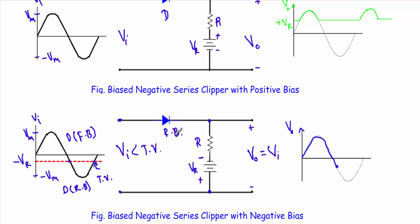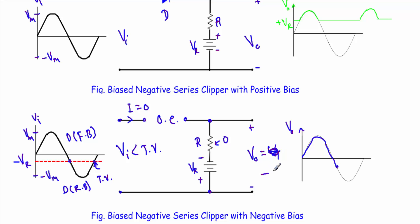When the input voltage Vi is less than the transition voltage, the diode will be in reverse bias. When a diode is in reverse bias, we replace it with an open circuit. With the circuit opened, the current flow I will be equal to zero, therefore there is no voltage drop across resistor R. Since we are taking the output across those terminals, the output voltage will be equal to minus Vr within that interval of the input voltage. After that, the output voltage will follow the same shape of the input voltage. This is the output voltage of the biased negative series clipper with negative bias.